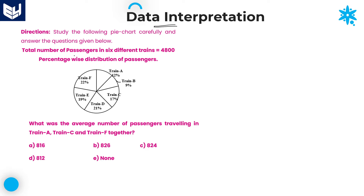After that, we need to solve the questions. The information is about the total number of passengers in 6 different trains, that is 4800. This pie chart shows the percentage-wise distribution of passengers. Out of 4800, in each and every train, what percentage of passengers are travelling — that is the given information.